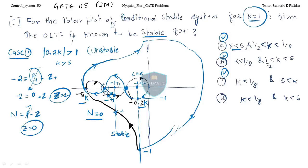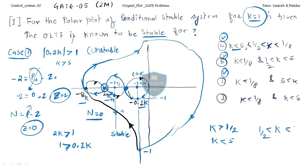For the k values: condition one — 2k should be greater than 1, and condition two — 1 should be greater than 0.2k, so k should be less than 5. From these: k should be greater than 1/2 and less than 5. We are getting this condition from the analysis. What about k less than 1/8? Option B gives that condition.